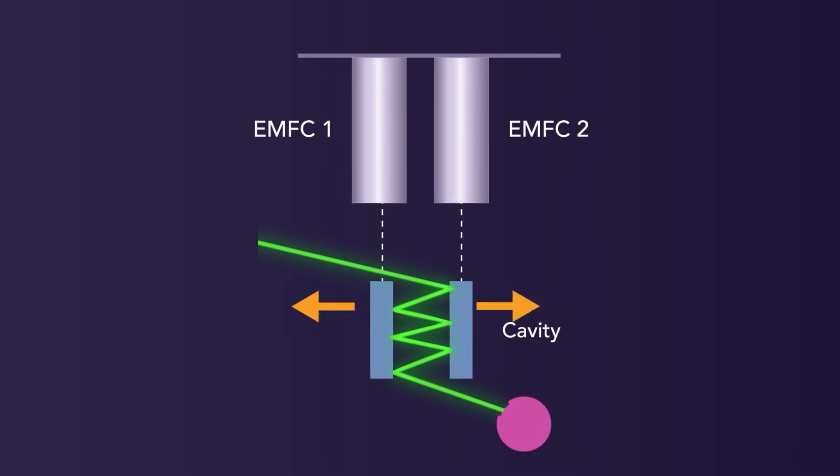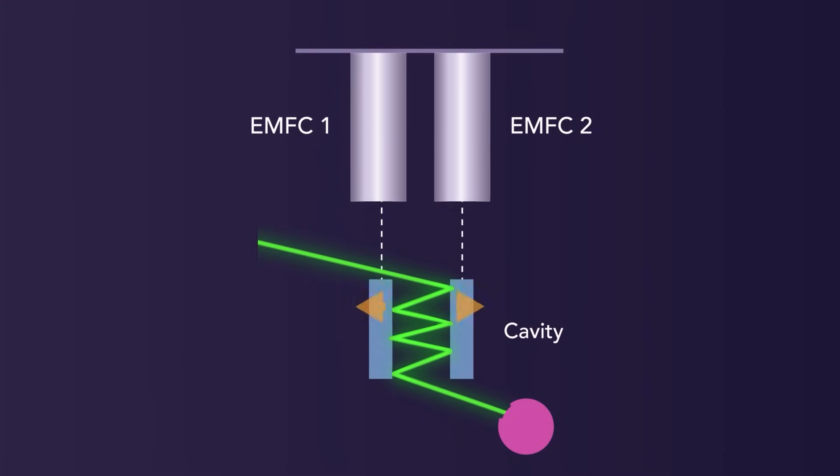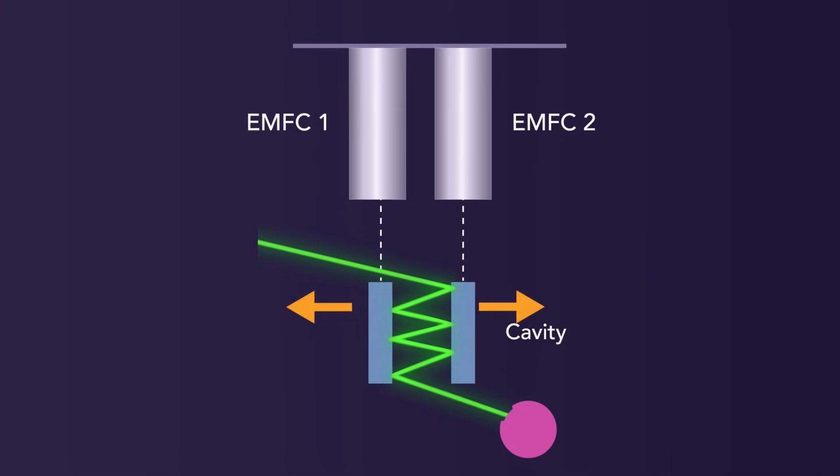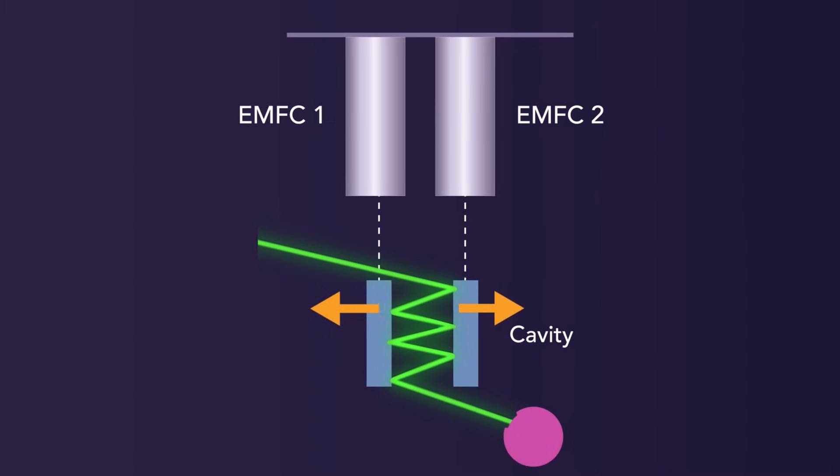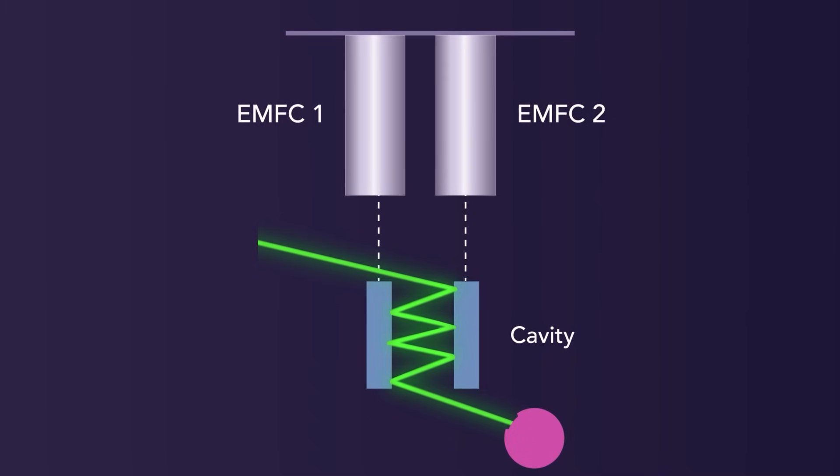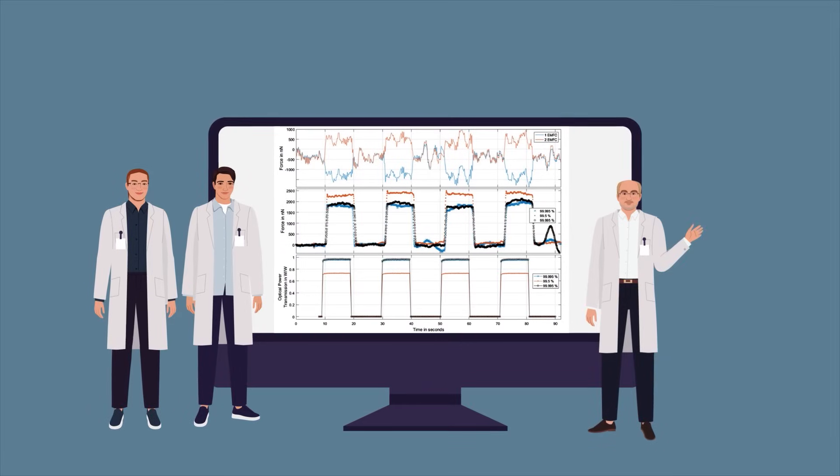Here, both mirrors are attached to movable parts of a balance instrument which use electromagnetic forces to balance out the forces exerted by the photons as they repeatedly bounce between the mirrors.